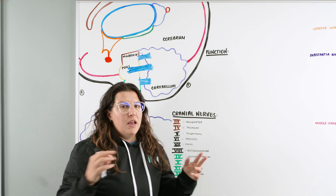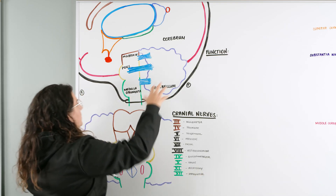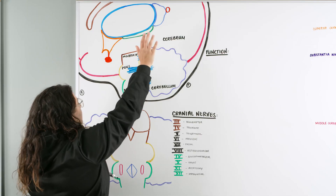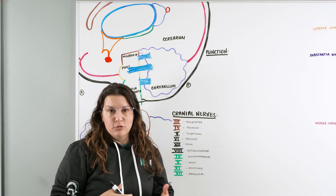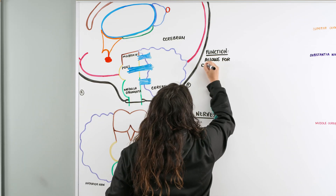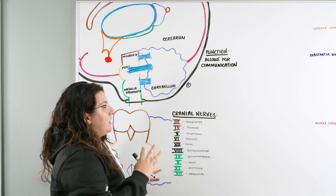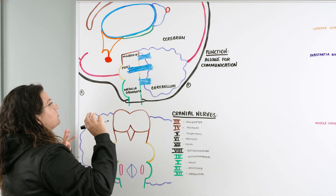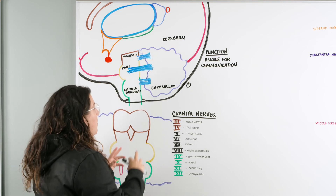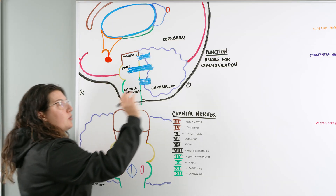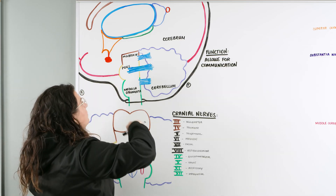The main function of the brainstem is to allow communication — taking signals from the cerebrum to the cerebellum, back up to the cerebrum, and down to the spinal cord and the rest of the body. This includes all the different types of input and output — afferent and efferent pathways — allowing neuro information to be sent to and from the brain throughout the rest of the body. Essentially, it's a highway allowing all this different communication to occur.